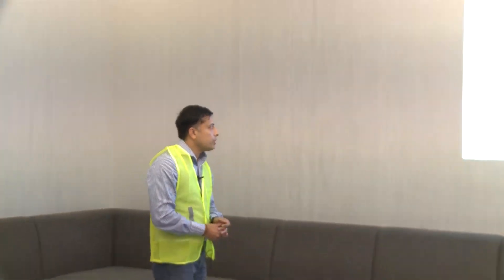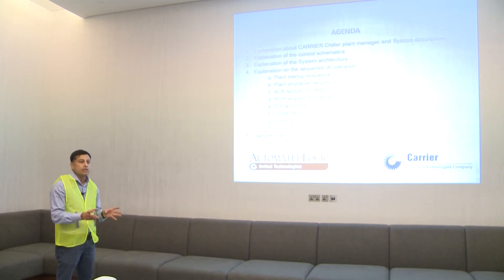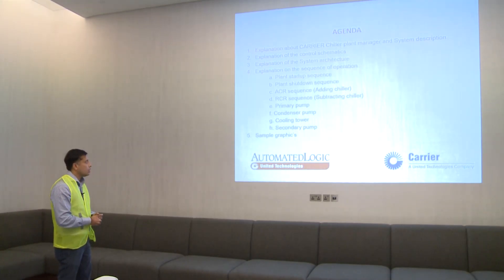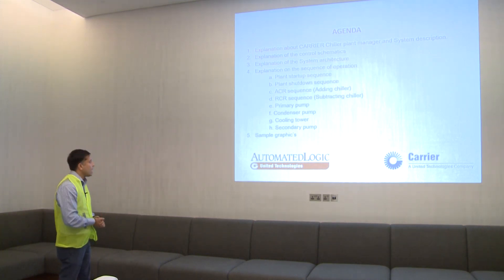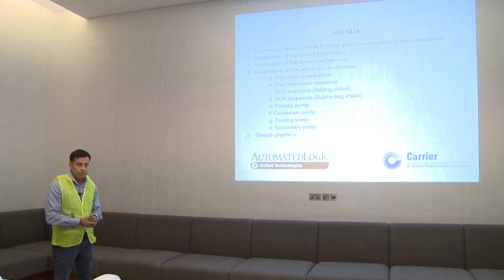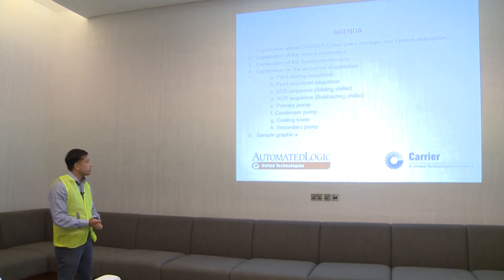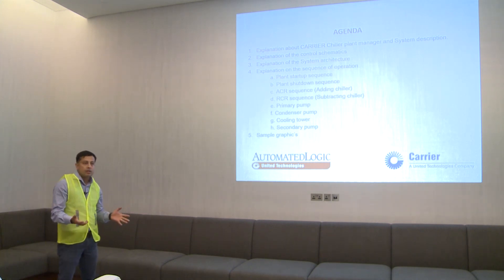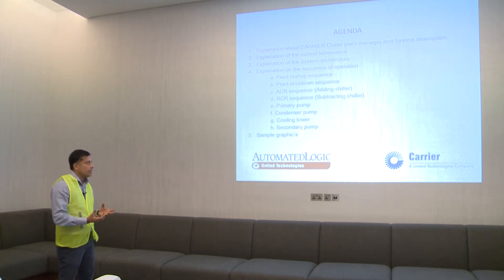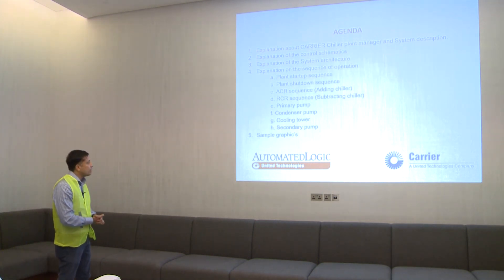These are the topics we are going to cover today. First, the Carrier Chiller Plant Manager — a description of the equipment controlled by the Plant Manager. Second, an explanation of the control schematic — where the sensors are, the importance of sensors, which are critical sensors, and which are normal reading sensors. Third, the architecture — how the equipment is connected to the Plant Manager, including the location of DDC controllers, inputs, outputs, and how the networking is done.